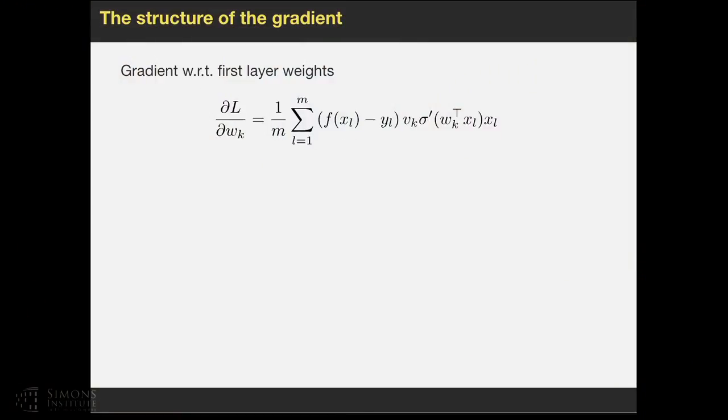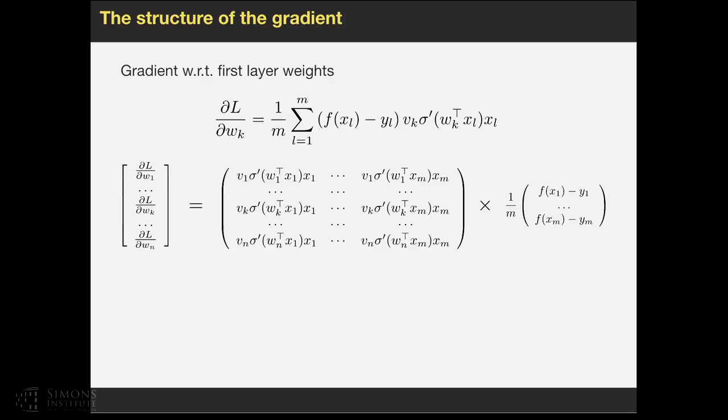We start by analyzing the structure of the gradient. The gradient with respect to the first layer of weight WK is as follows. If you stack all the gradients together into a long vector, we can rewrite them in a matrix form. Then we'll have this special matrix where each column corresponds to one data point, and there are N times D rows where N is the hidden units and D is the input dimension. This one is the residual vector where each entry is the difference between the function prediction and the target.